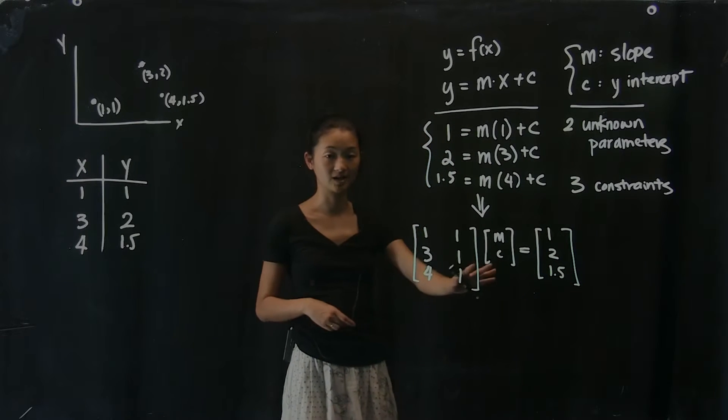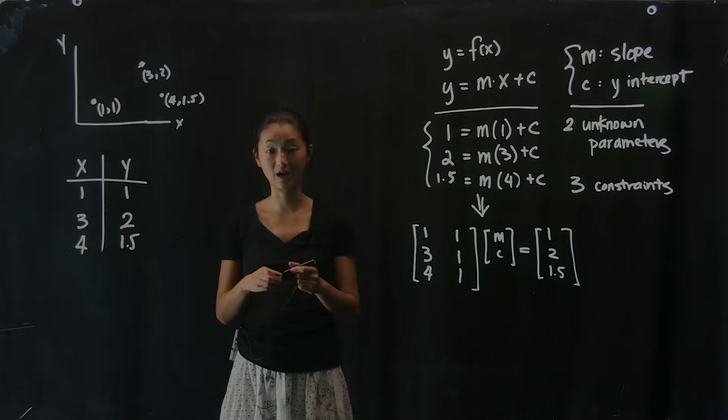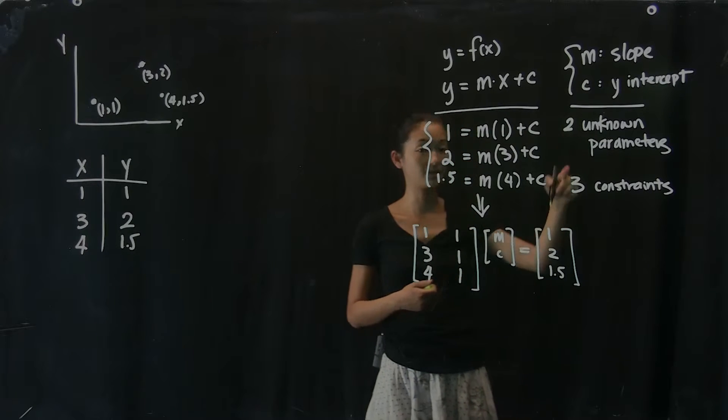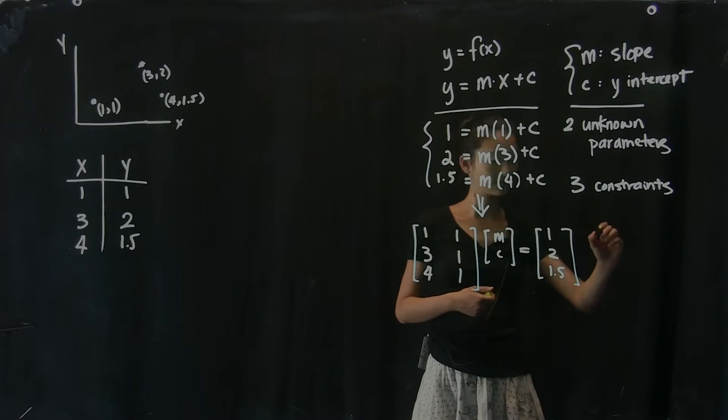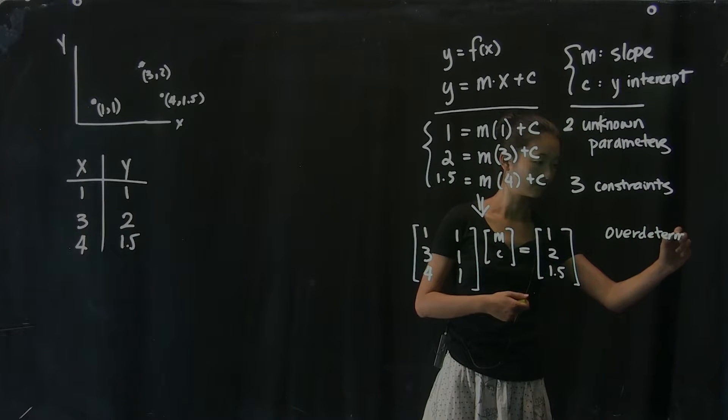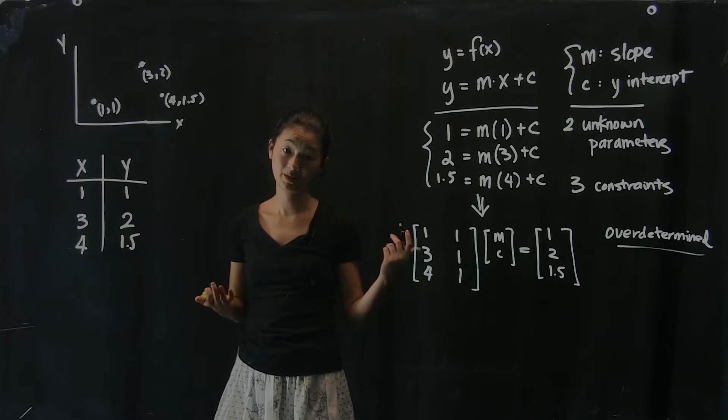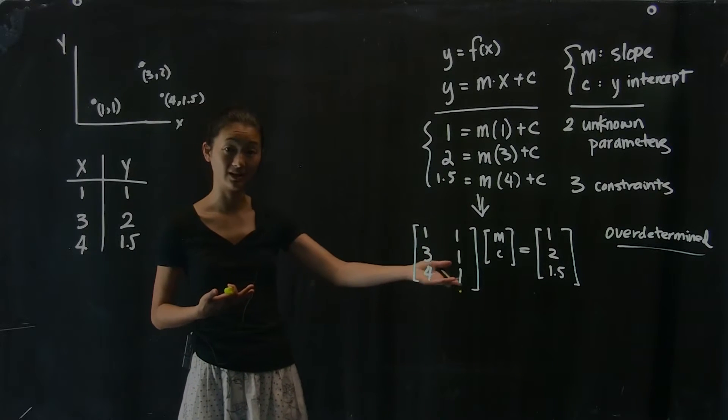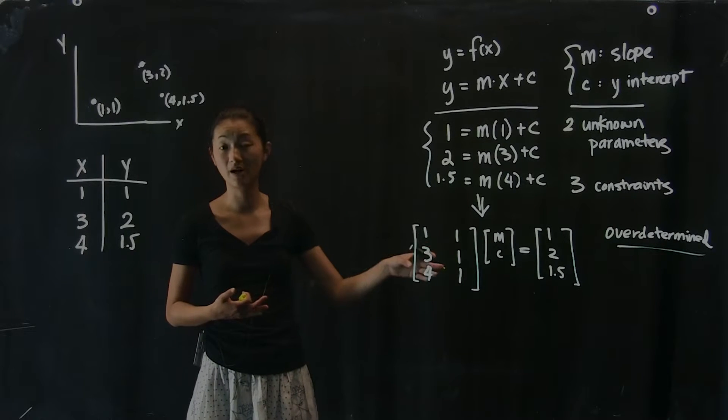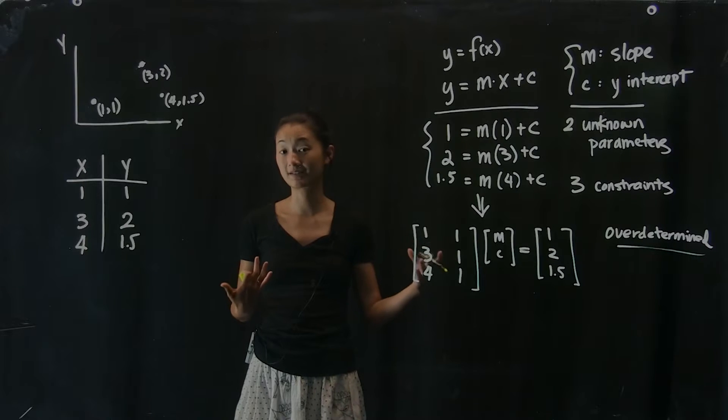Now, the fact that it has two unknowns and three constraints means that this system is now over-determined. And the fact that it's over-determined has a couple of implications. One, we know there's not going to be an exact solution. However, we can go ahead and try to solve it anyway, computationally, and try to get something that's close.